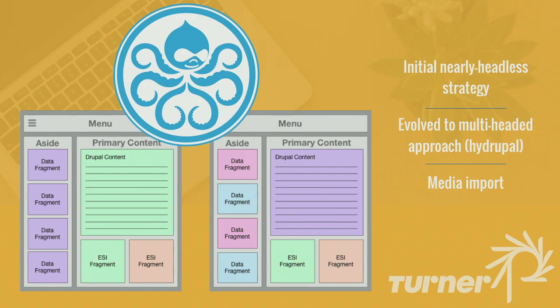One of the initial thoughts was we're going to do decoupled or headless Drupal. We knew we were going to have to rely heavily on Drupal-themed components, so it made sense to let Drupal take at least some of the theme work — just as much of the site as it knew about. In most cases, Drupal is going to be responsible for rendering about 60% to 70% of any given page on the site. The render stack basically looks like this.